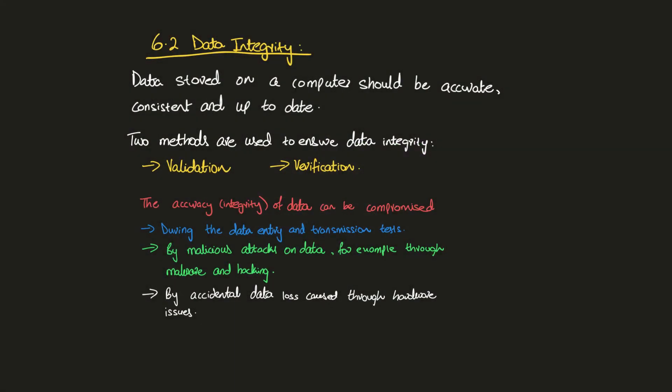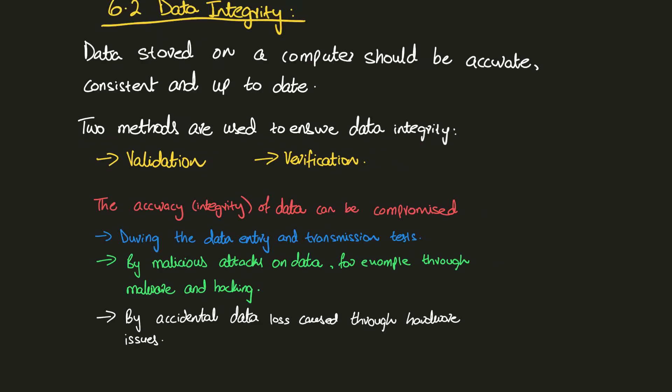Today we'll be going over data integrity. Data stored on a computer should always be accurate, consistent, and up-to-date. It is really important for data to be up-to-date because a company cannot be living in the past — you need to bring in innovation and have the most up-to-date data in order to proceed with new projects. You cannot be catering to demand that was five or six years ago and is not present right now. There are two methods to ensure data integrity: one is validation and the other is verification.